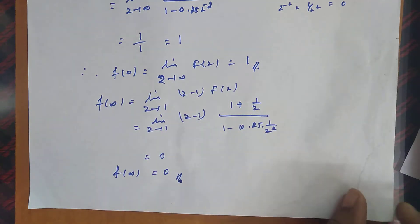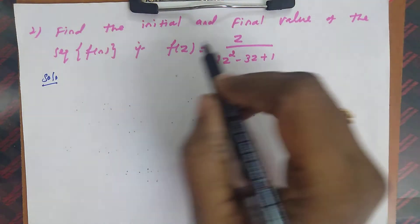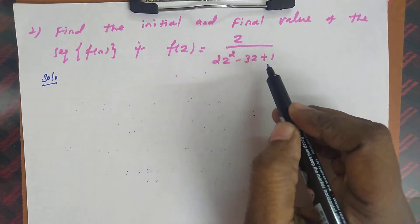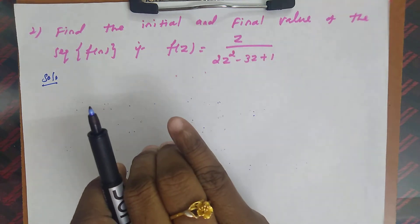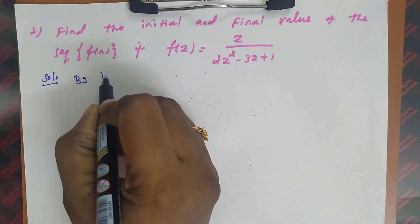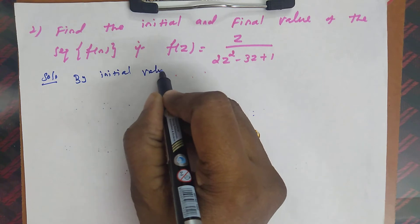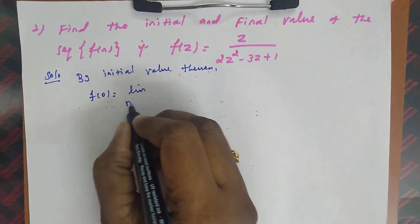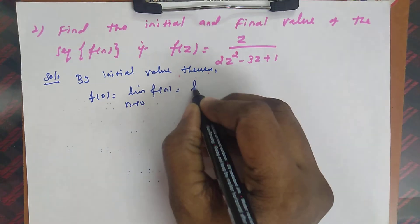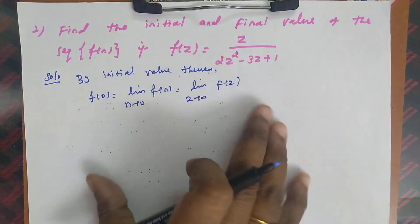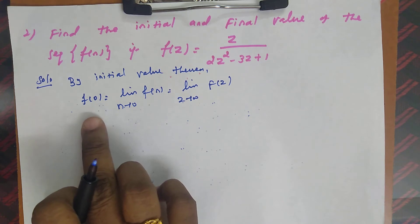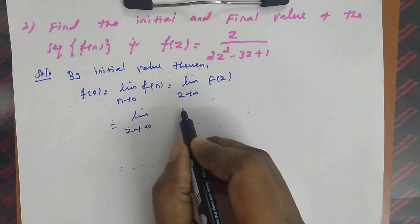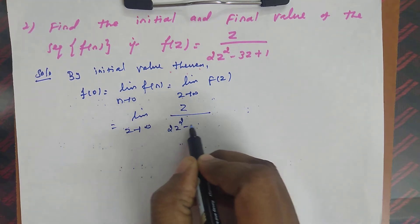So for question 1: initial value f(0) = 1 and final value f(∞) = 0. Now look at the second question: Find the initial and final value of the sequence f(n) if F(z) = z / (2z² - 3z + 1). By the initial value theorem, f(0) equals the limit as z tends to infinity of F(z), which is limit z→∞ of z/(2z² - 3z + 1).